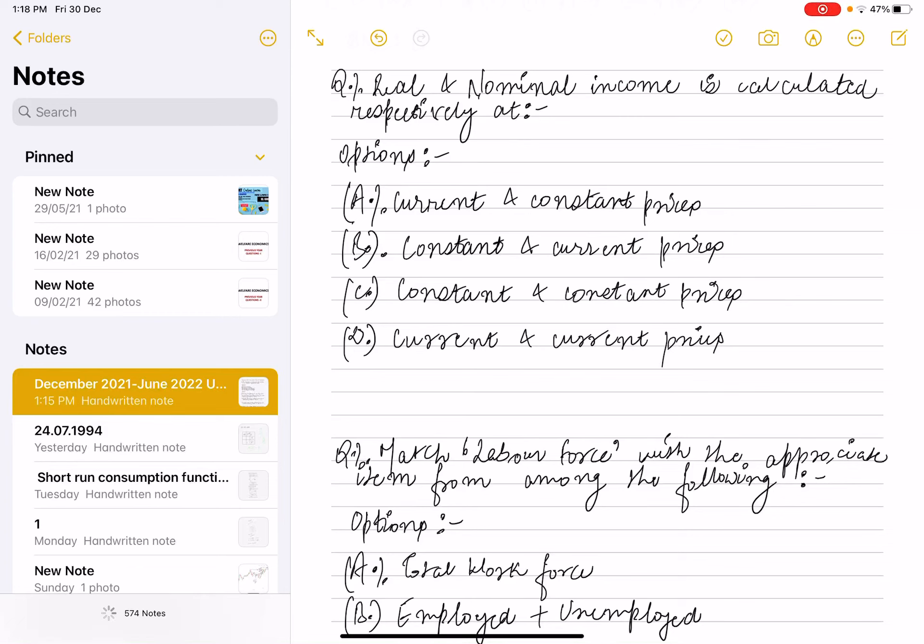Hello everyone, welcome to Egonomics by Vishwan Arpita. Today's video covers some previous questions. The first question is: real and nominal income is calculated respectively at current and constant prices, constant and current prices,